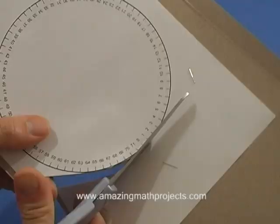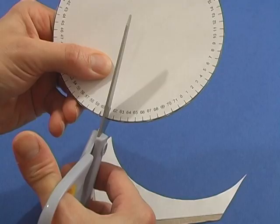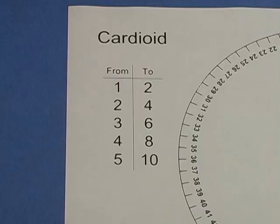We'll make a cardioid and a nephroid out of string art. Cut out the template from box board. Make short slits around the circumference of the circle.